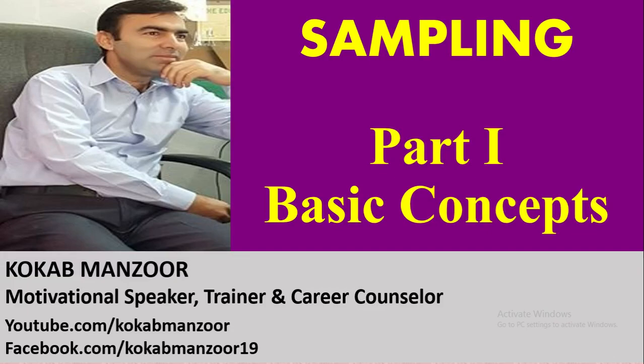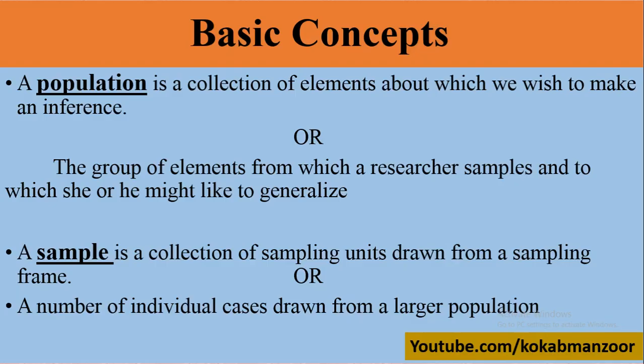Before that, we want to be familiar with some small terms: population, sample, element, parameter, and statistic — what these mean. Population is the collection of elements about which we wish to make an inference. That is, those people, things, or objects about which we want to draw conclusions.